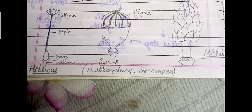We are going to write notes on the pistil or carpel. The first diagram shows hibiscus, which is multicarpillary and syncarpous — the carpels are fused together. In Michelia, there is a cluster of stigma where all carpels are free. So hibiscus is the example of fused carpel and Michelia is the example of apocarpous or free carpel.